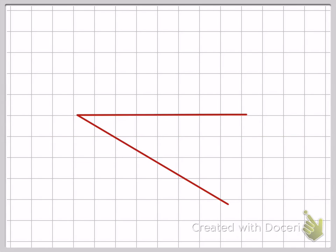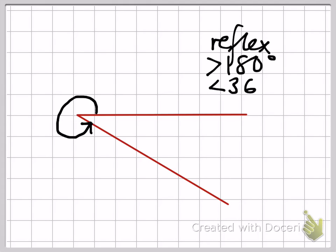Finally, we've got a reflex angle. Now, in this particular case, we're measuring the amount of turn between this line and that line going around the outside. Reflex angles must be greater than 180 degrees, but less than 360 degrees. Be very careful, because sometimes you might think you're measuring this smaller angle here, whereas in actual fact, if it's a reflex, it goes right around the outside.